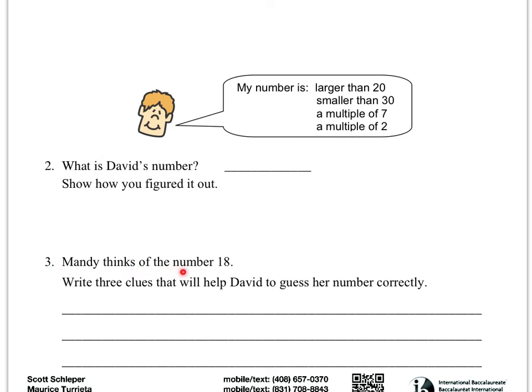Part 3 says Mandy thinks of the number 18. We want you to come up with your own three clues that will help us figure out what that number is correctly. But you've got to make sure that those three clues all point to only 18. So they can't just be clues that might point to any other number besides 18. So one of the clues could be, it's less than 20.